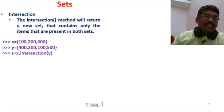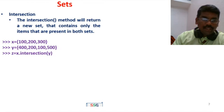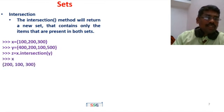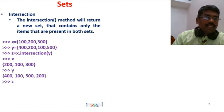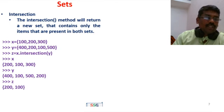For example, print the common elements using intersection. X contains: 100, 200, 300. Y contains: 100, 200 in any order. The output displays: 100, 200 — the common elements. This is called the intersection method.